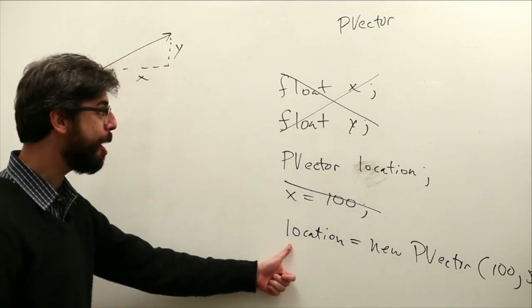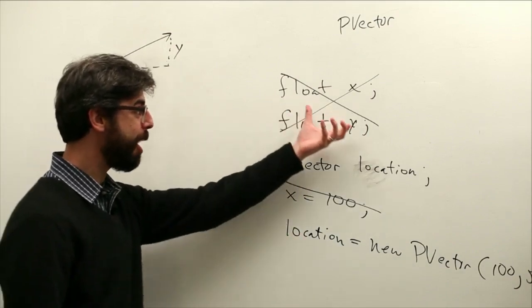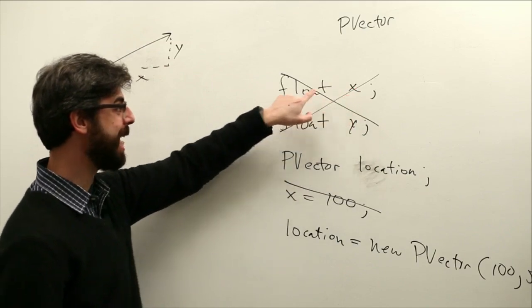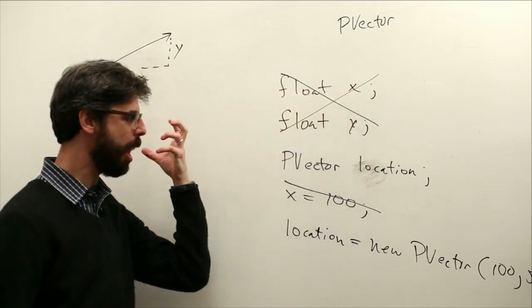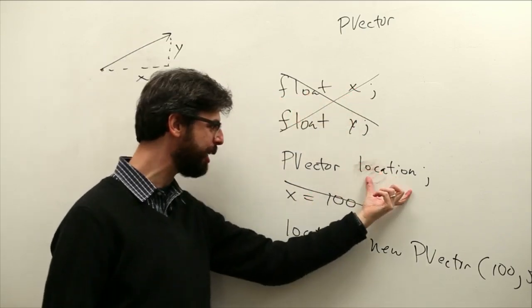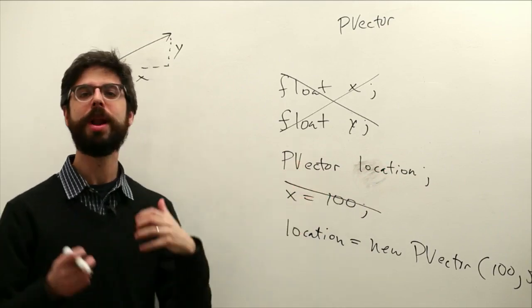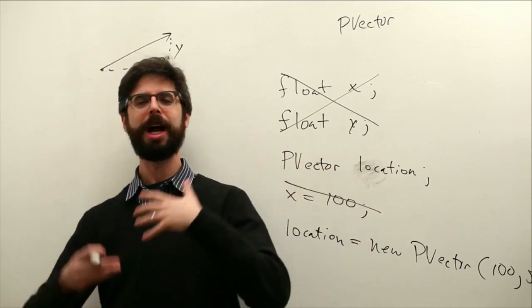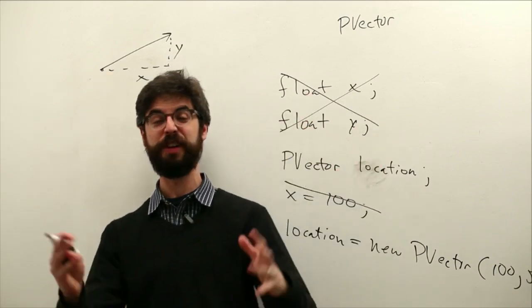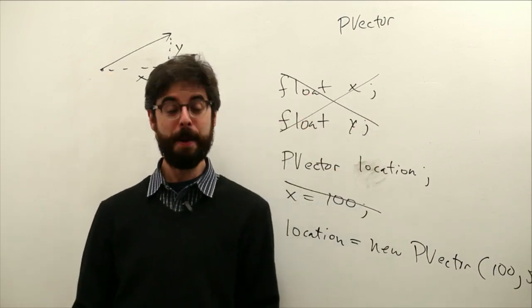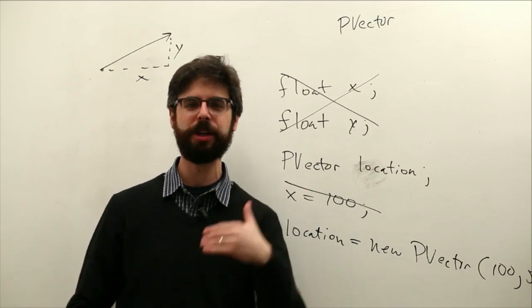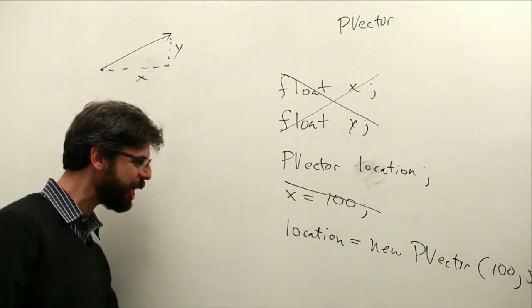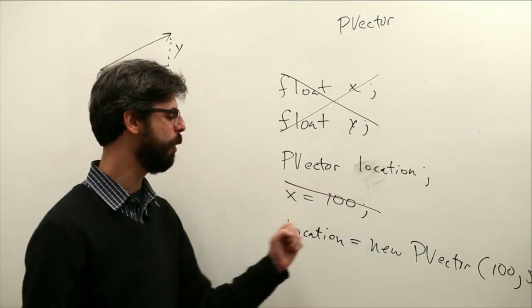OK, so what is going on here? Primitive variable. The name is x. The data type is float. An object variable. The name is location. The data type is PVector. Whenever you make an object, bubble b, ball b, fish f, then you say make a new fish, make a new ball, make a new bubble. We are instantiating that object. We do the same thing with PVector.